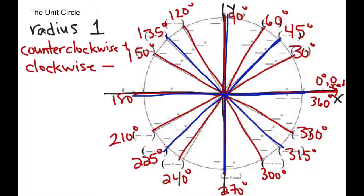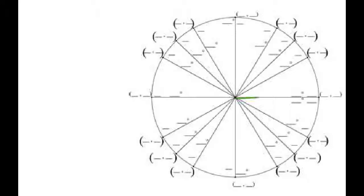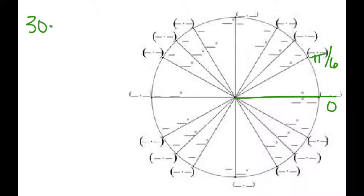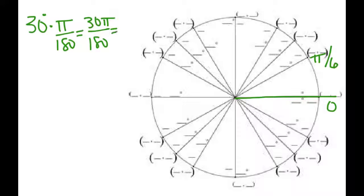Now let's talk about those angles in terms of radians. In radians, 0 degrees is 0 radians. 30 degrees is pi over 6 — we turn degrees into radians by multiplying by pi over 180, so 30 times pi over 180 reduces to pi over 6. 45 degrees is pi over 4. 60 degrees is pi over 3. 90 degrees is pi over 2.